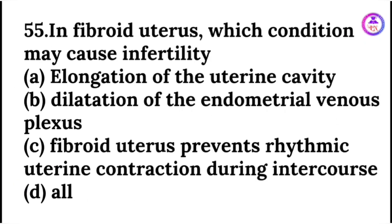In fibroid uterus, which conditions may cause infertility? The answer is all of the above: elongation of uterine cavity, dilatation of the endometrial venous plexus, and fibroid uterus preventing rhythmic uterine contractions during intercourse.